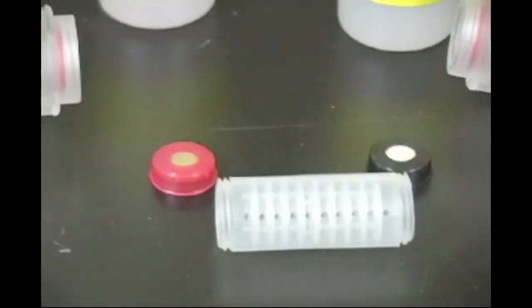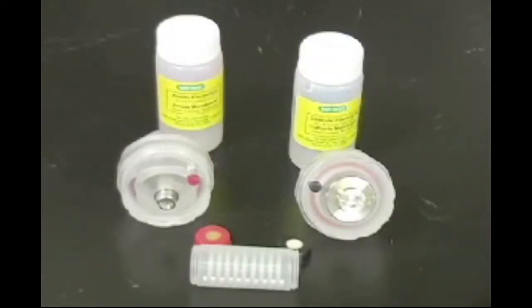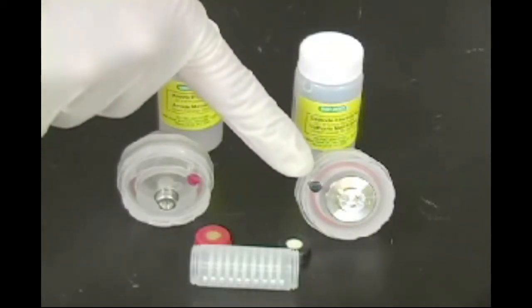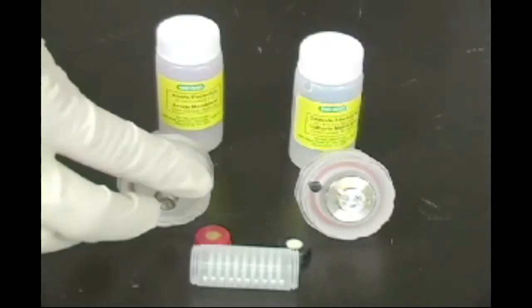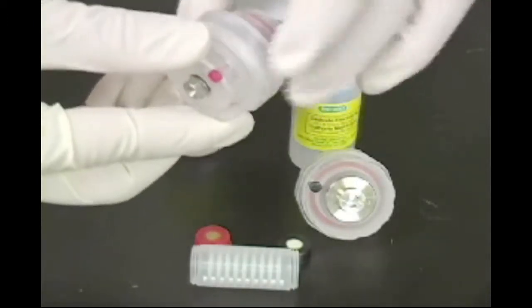The electrode assemblies consist of an anode designated with a red button and a cathode designated with a black button. Each electrode chamber has two components, an inner and an outer component, that are joined together with a threaded sleeve.